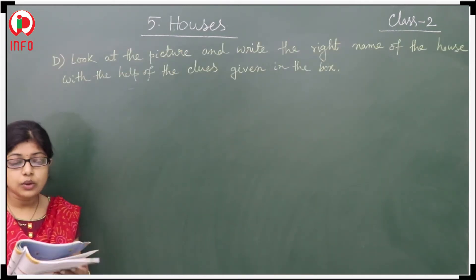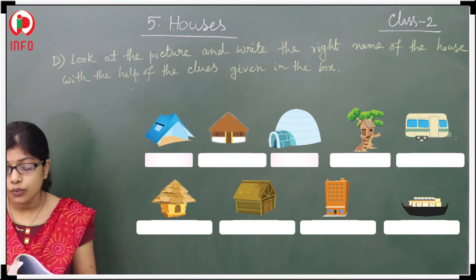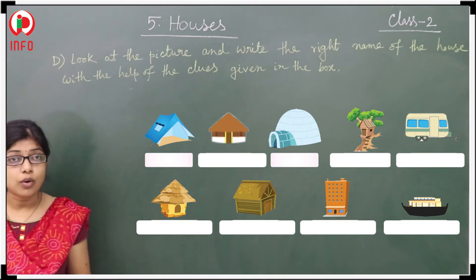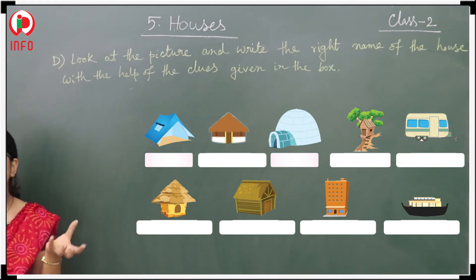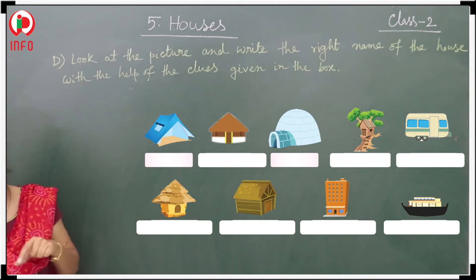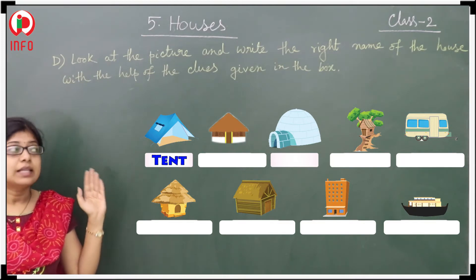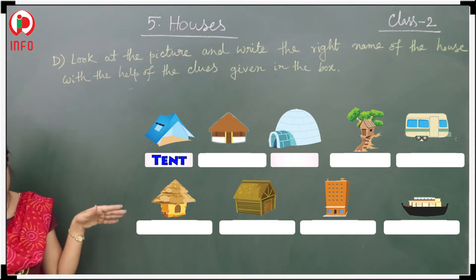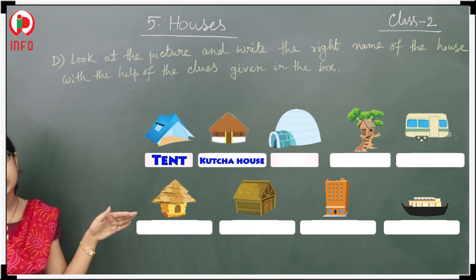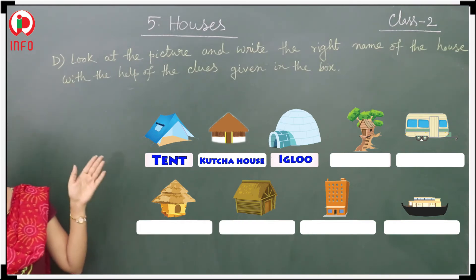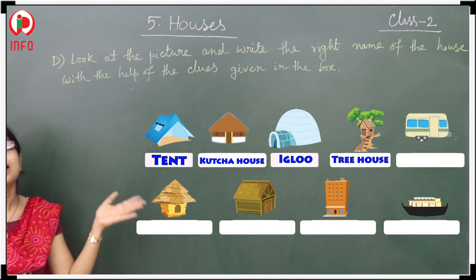Look at the picture and write the correct name of the house using the clues given in the box. You are able to see the pictures. The first one is the tent, next to that is the kutcha house, after that is the igloo, then a tree house, and the last one in the top row is the cabin.